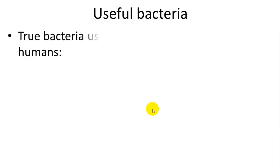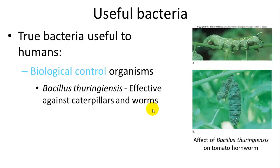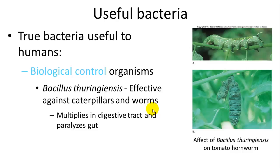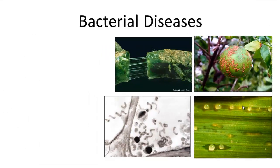Many bacteria are very useful and not all of them cause diseases. Some include biological control organisms. Bacillus thuringiensis will infect worms that destroy crops by multiplying in the digestive tract, paralyzing the gut so the worm can no longer eat or move leaves through it — causing it to bloat and die. Bacillus papillae is another example, effective against Japanese beetle grubs.